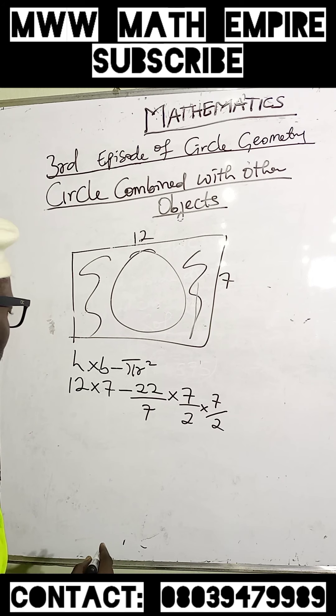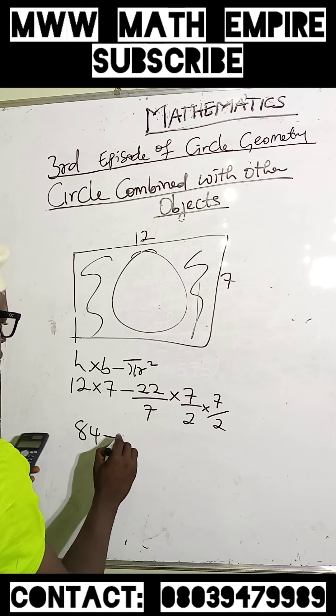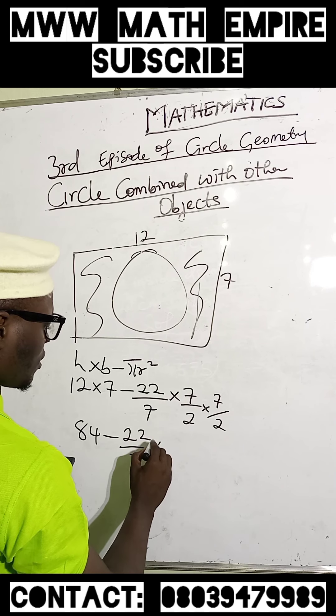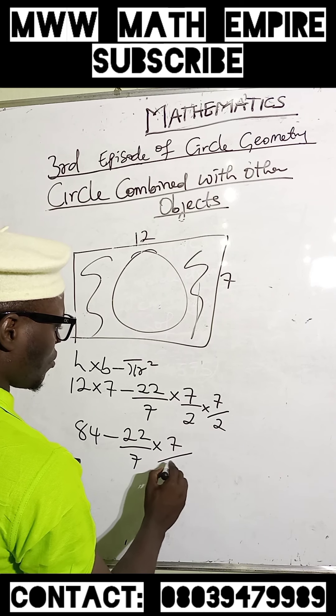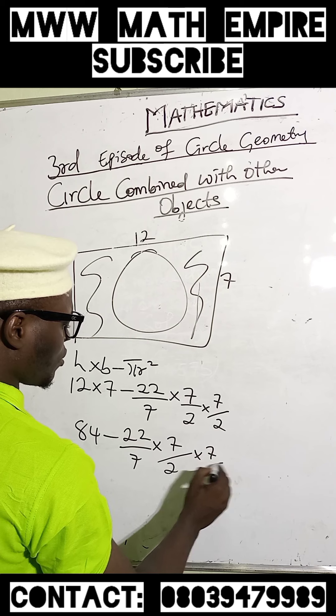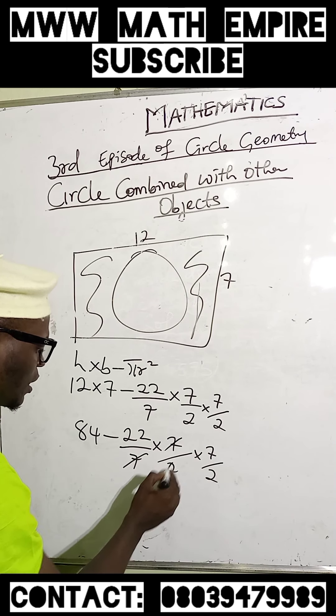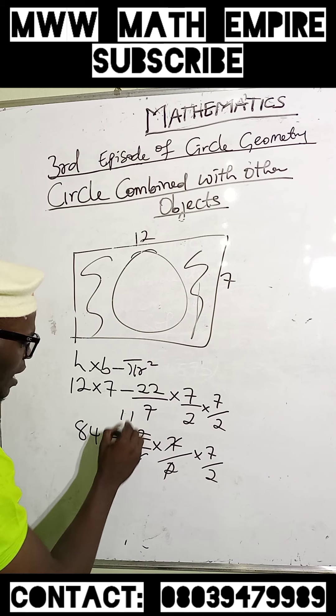Now we have 84 minus 22 over 7 multiplied by 7 over 2, all over 2. This 7 can cancel out, and dividing by 2 gives us 11.